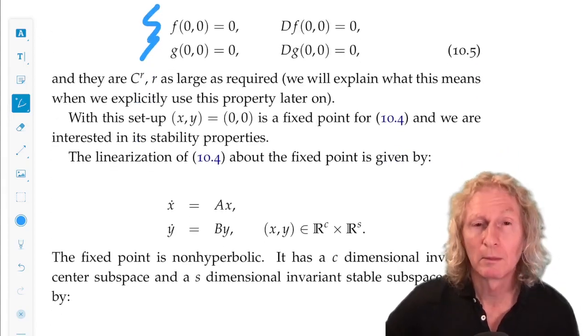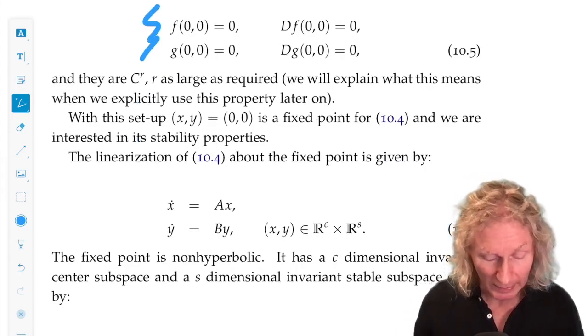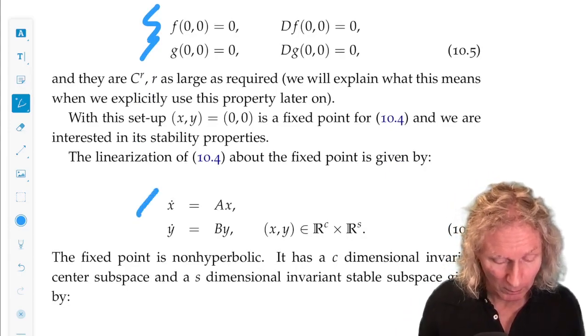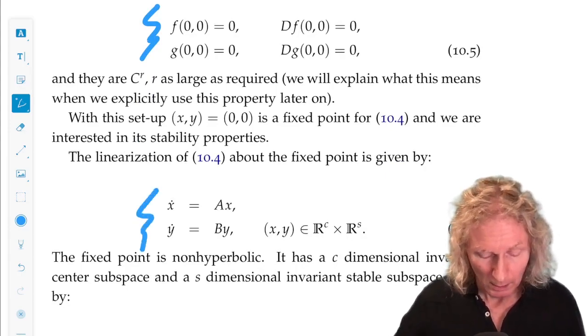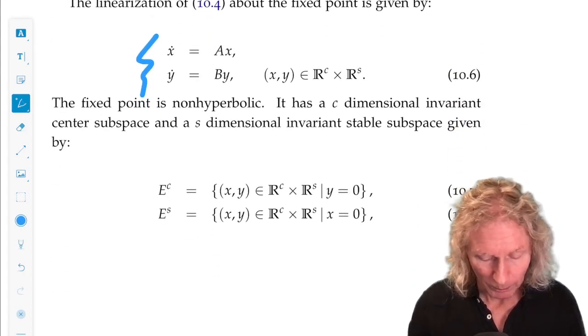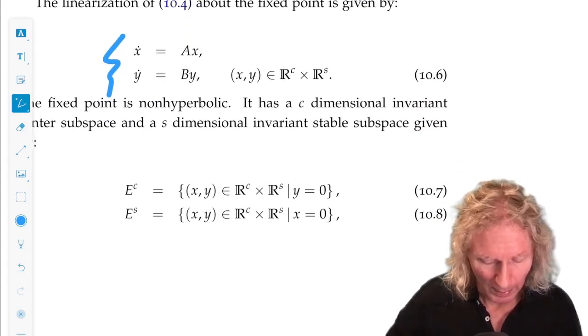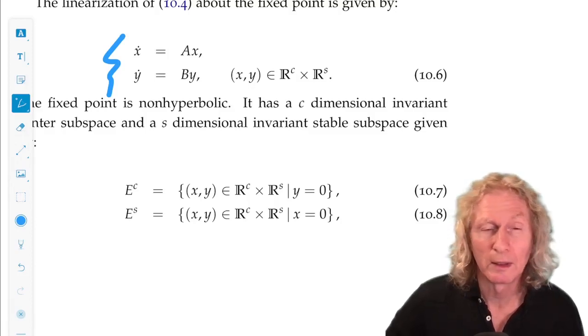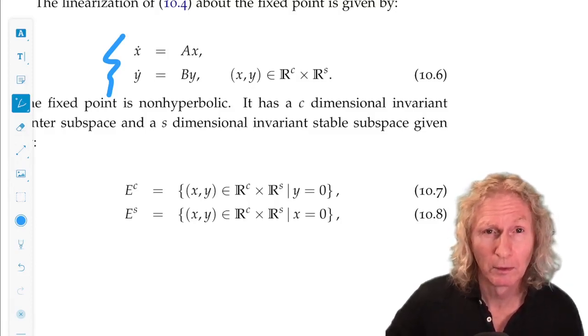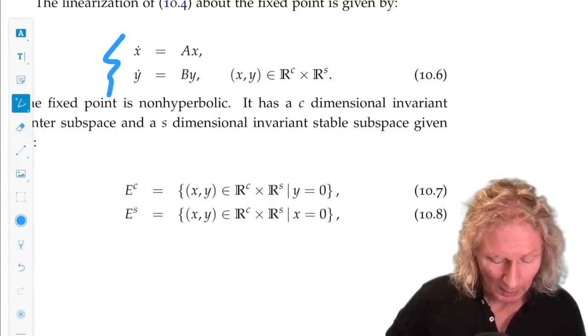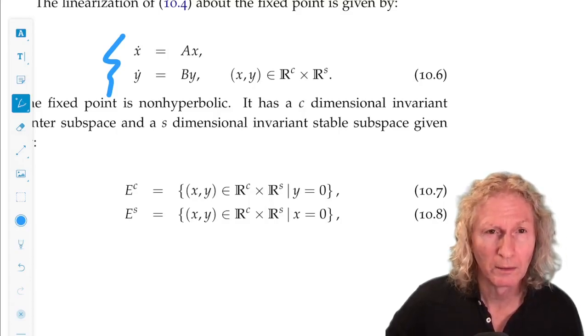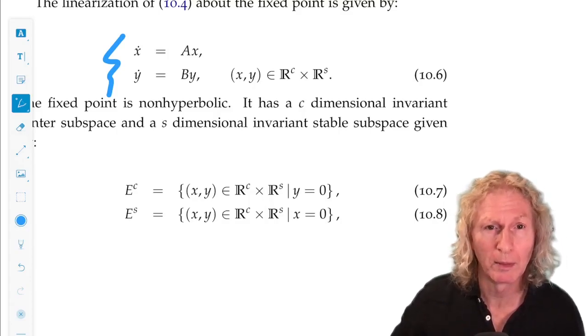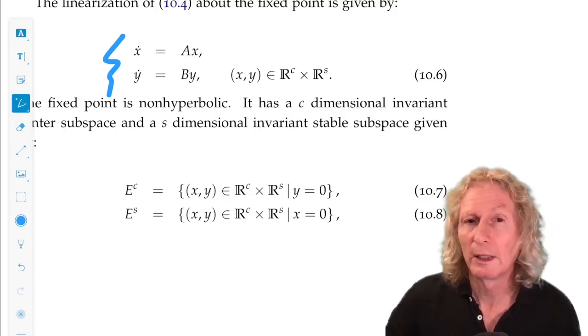So the origin is a fixed point, clearly, and the linearization about the origin is given by this equation. We see that Y equals zero is the invariant center subspace for the origin, and X equals zero is the invariant stable subspace for the linearized dynamics.